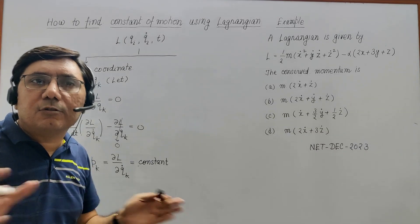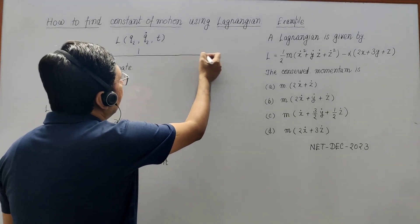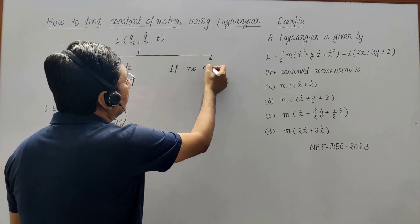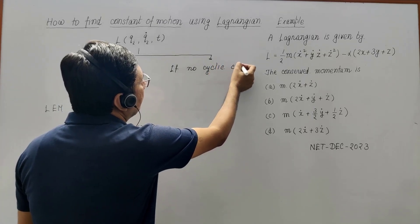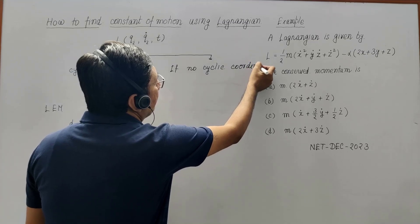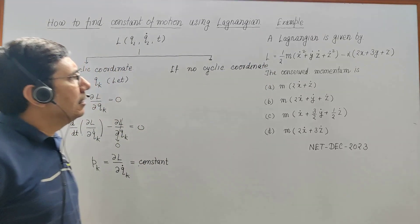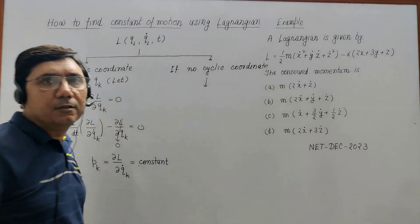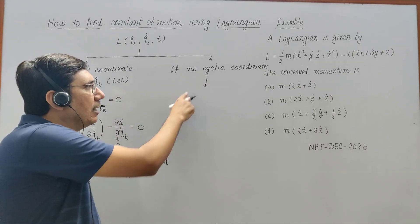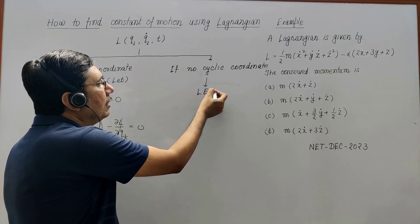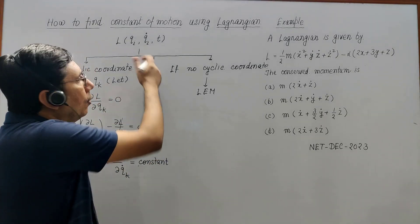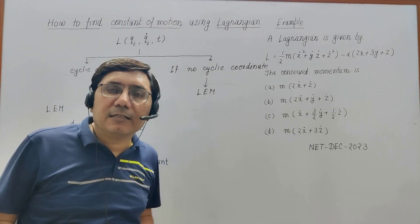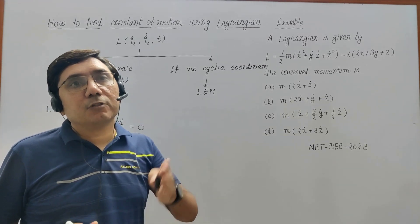Suppose there are no cyclic coordinates — that is the second case. If no cyclic coordinate is found, you are left with only one option: write down the Lagrangian equations of motion. In this case, you will write the Lagrangian equation of motion for all generalized coordinates involved. Suppose x, y, and z are the three generalized coordinates — then write the Lagrangian equation of motion for all three.